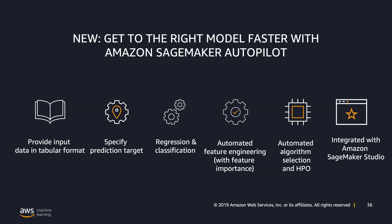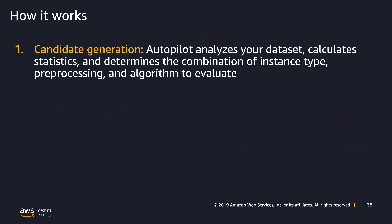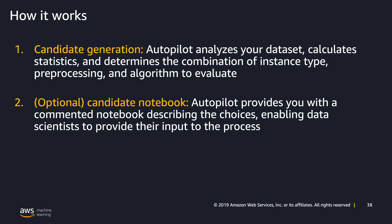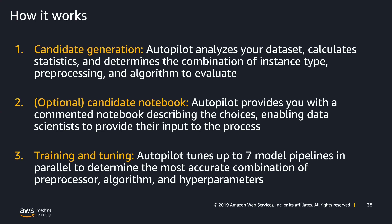Once you give it your data, it analyzes the data set, calculates statistics, and determines the combination of instance types, preprocessing, and algorithms to evaluate. From there, it creates two notebooks — these tell you insights on what it learned about your data and what it's going to do to create an exhaustive search of models. Then it creates pipelines where it starts training multiple models.